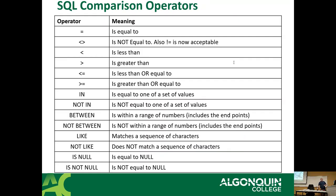Here are the operators we have: equal, the diamond operator (less-than greater-than combined) which is the old not-equal - you're blessed that you can now use the not-equal you're used to in Java, which showed up about 10-12 years ago. Less than, greater than, less than or equal to, greater than or equal to - those are the same as in Java. Then we have IN and NOT IN. IN is if you feed it a list of possible values: you can go IN (1, 2, 3, 4) and it'll match anything that has one, two, three, or four. NOT IN means give me everything but this list.